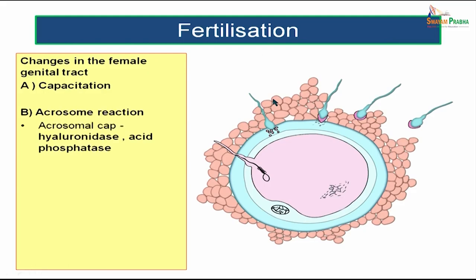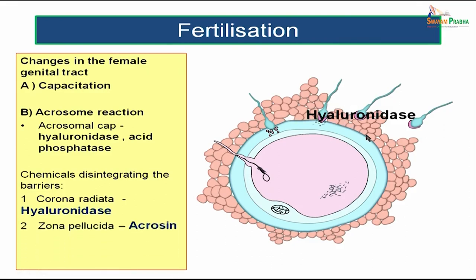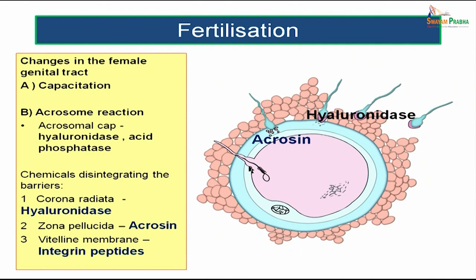The next step after capacitation is the acrosome reaction. During the acrosome reaction, hyaluronidase and acid phosphatase are released from the acrosomal cap of the sperm. Hyaluronidase acts on the corona radiata. The zona pellucida is lysed by acrosine, and the vitelline membrane is lysed by integrin peptides. So the three chemicals act at different levels: hyaluronidase on the corona radiata, acrosine on the zona pellucida, and integrin peptides on the vitelline membrane — these are the three main barriers the sperm must cross.